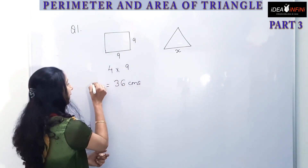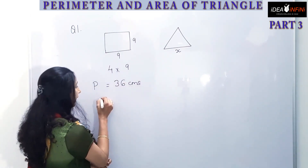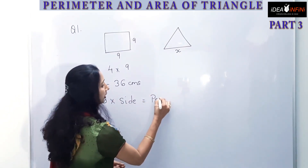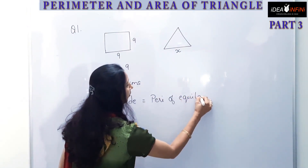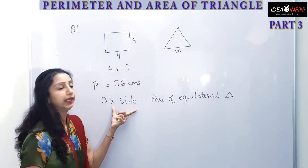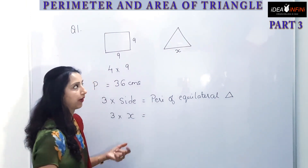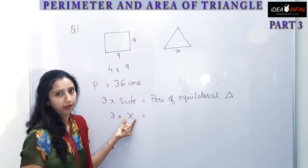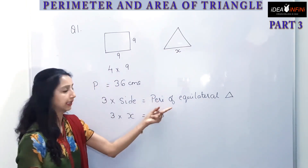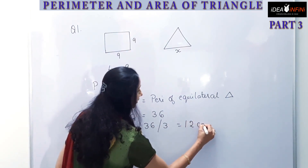The perimeter of the square is 36. Since the perimeter remains the same, in the case of the equilateral triangle, 3 into side gives the perimeter. So 3 into x equals 36. We equate it to 36 because the perimeter remains the same. Therefore x equals 36 divided by 3, which gives 12 centimeters.